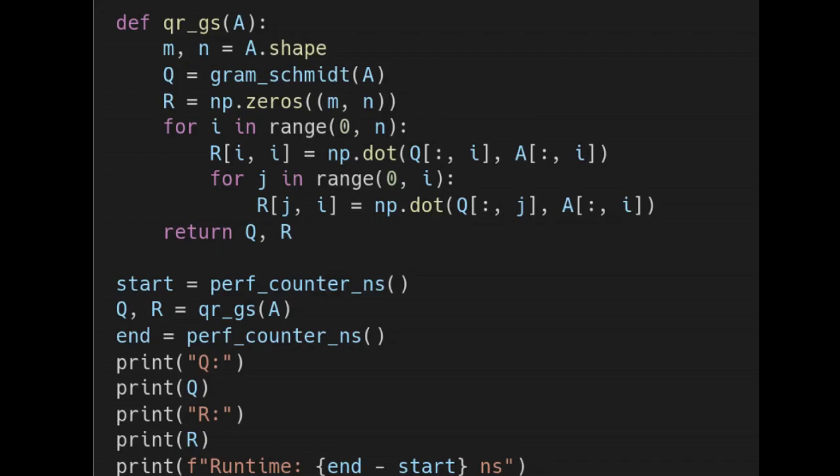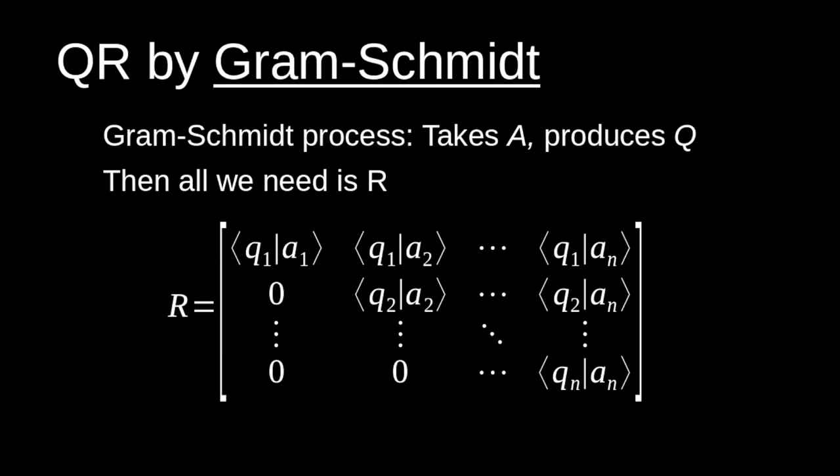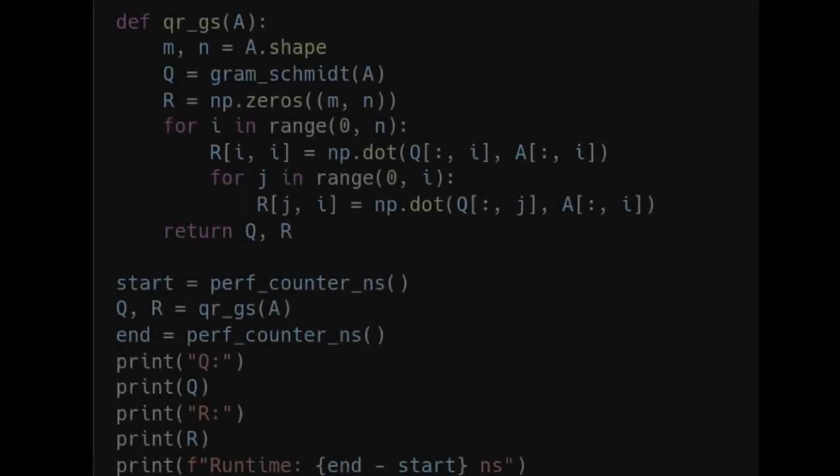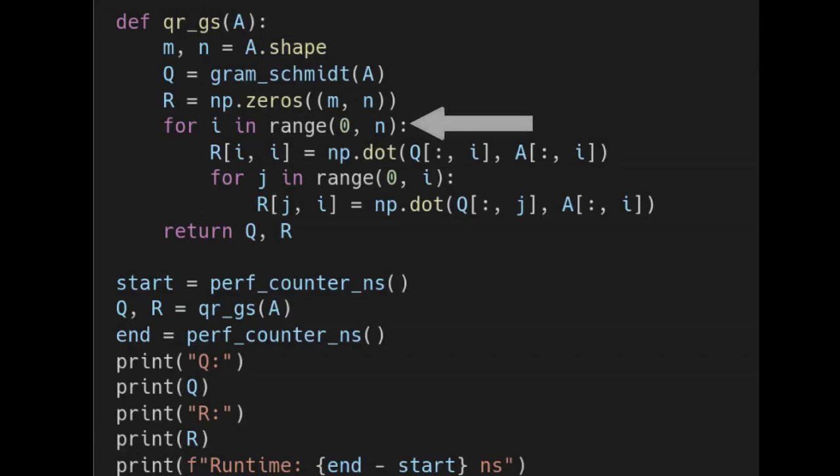And in these two loops right here, we are computing all the necessary inner products and sliding them into the respective positions from this particular formula that I showed you before. More particularly inside this first loop, we are taking care of the inner products along the diagonal of our R matrix. And then the second loop is taking care of everything above the diagonal.